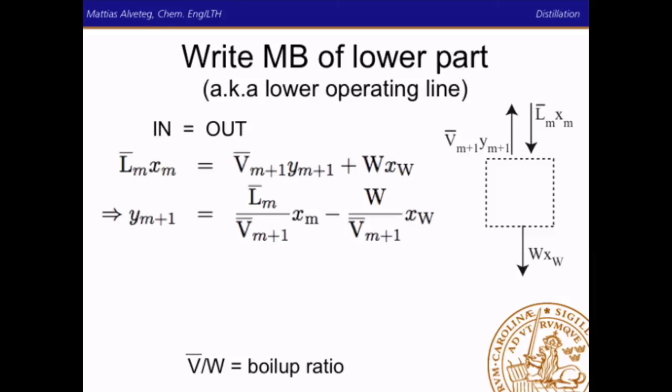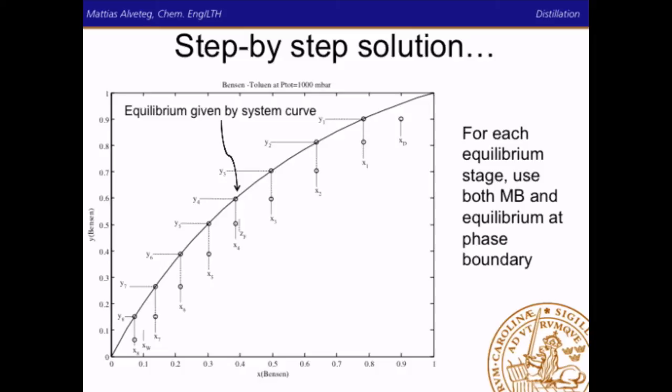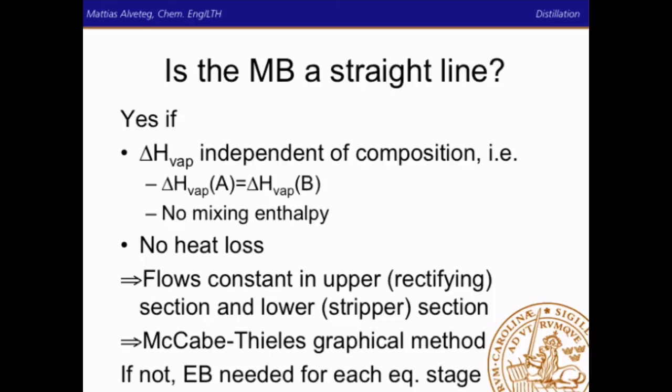We can step through the distillation column: for each equilibrium stage we use both the mass balance and the equilibrium at the phase boundary. As you can see, each point seems to lie on a straight line — a straight line for the upper part and a straight line for the lower part. The mass balance is indeed a straight line if the evaporation enthalpy is independent of composition, meaning the evaporation enthalpy of substance A in molar terms must equal that of substance B and there must be no mixing enthalpy.